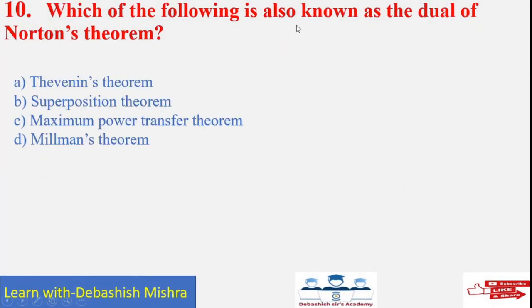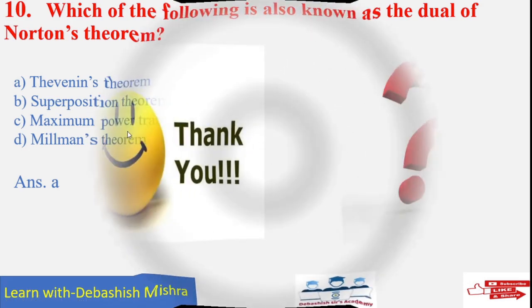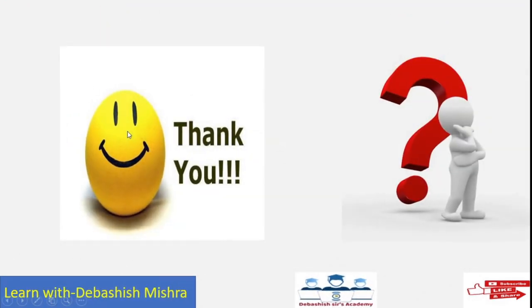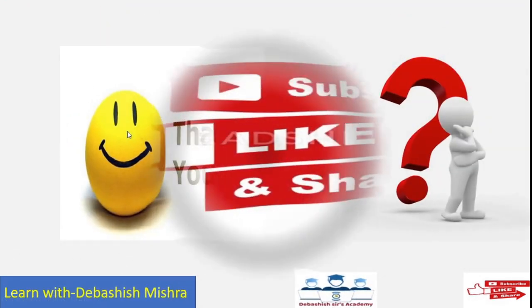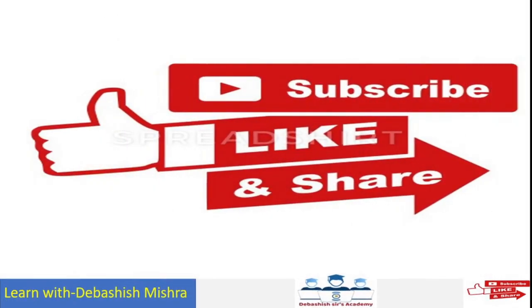Which of the following is also known as the dual of Norton's theorem? Simple: Thevenin's theorem. Thank you students. Please like, share, and subscribe to my channel.